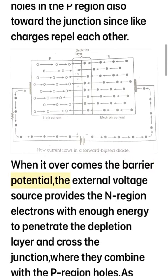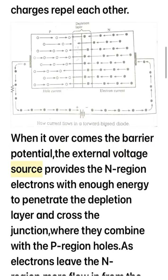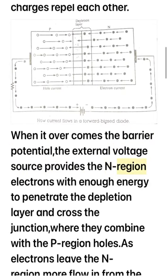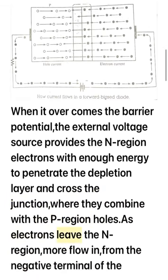the external voltage source provides the N region electrons with enough energy to penetrate the depletion layer and cross the junction, where they combine with the P region holes. As electrons leave the N region,